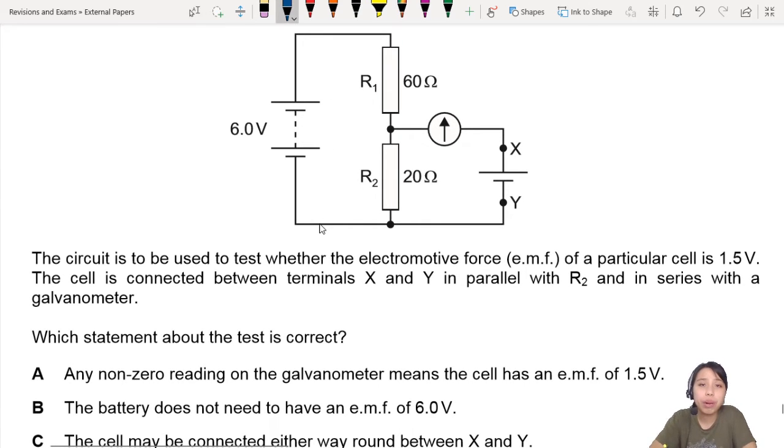They're talking about this cell right here - is this 1.5 volts? The cell is connected between terminals X and Y in parallel. Before we go to the statements, I want you to know something about this.